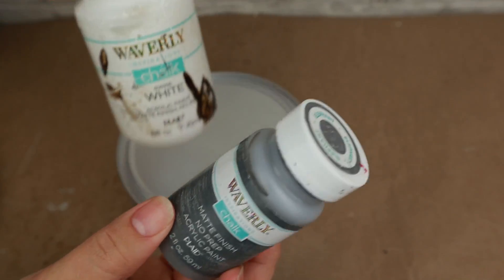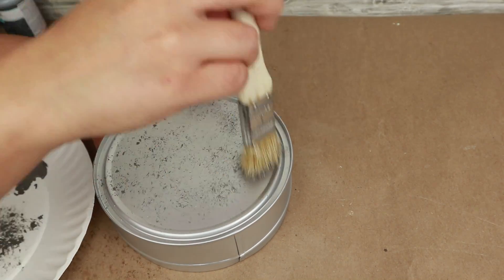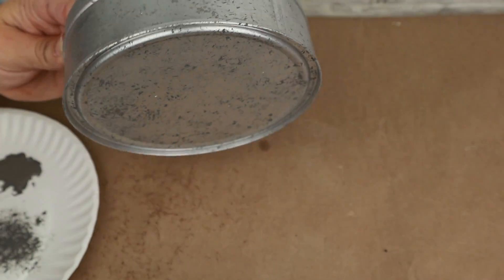First I use my DecoArt chalk paint in elephant color and with this brush that you can get at Walmart I'm going to put just a little paint and create stains on the whole container. From there I will use the color white and repeat the same steps, a small amount of paint on the brush and then create stains on my container.